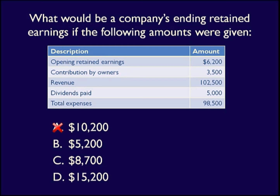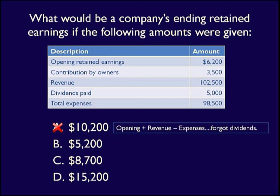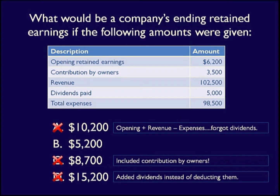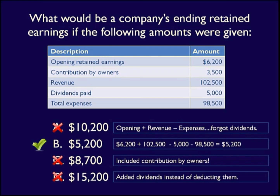A is incorrect — you remembered the opening balance, revenues and expenses, but you forgot to deduct the dividends. C is incorrect because it includes the contribution by owners, which is part of equity but not part of retained earnings. D is incorrect because you deducted expenses but added in the dividends when you should have subtracted them. B is the correct answer because it includes only the opening retained earnings plus the revenue less the expenses and less the dividends paid.